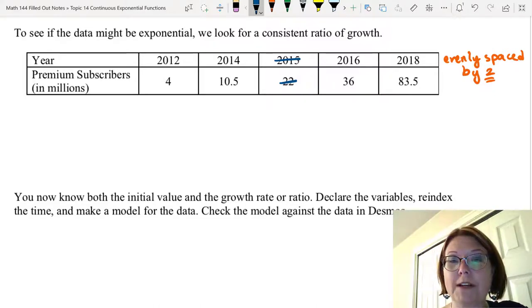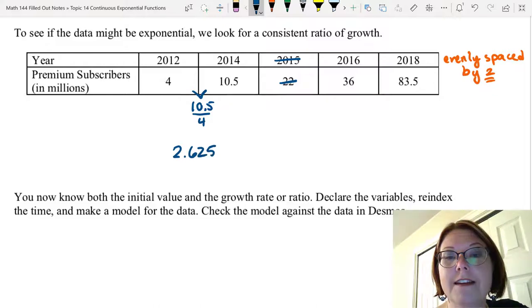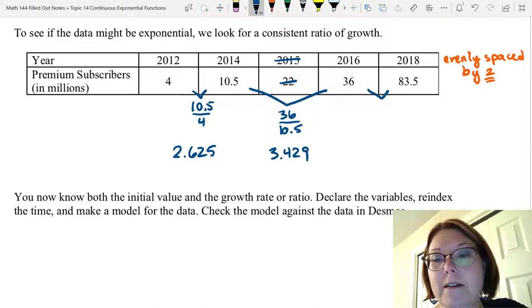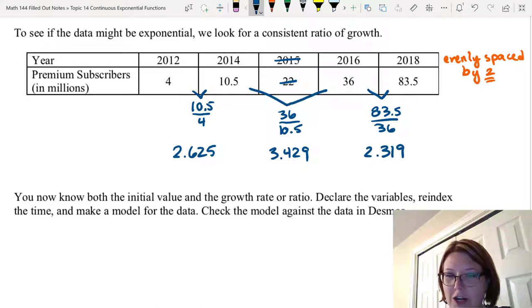Our first pair is 2012 to 2014. The ratio would be 10.5 divided by 4, which is 2.625. The next pair, skipping over 2015, would be 36 divided by 10.5. That's 3.429.